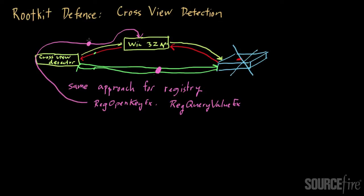Now I do also want to mention that this general concept of cross-view detection, it can be applied in other ways as well. For example, you can use cross-view detection to look for lists of running processes. Same concept, not the exact same approach, but the same concept, you can apply towards running processes.